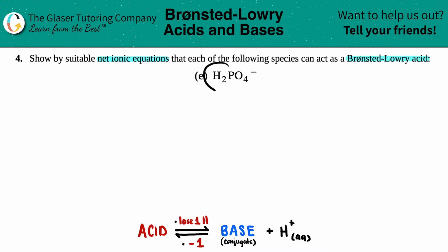So in this case, we just have to show that H2PO4 minus can act as a Brønsted-Lowry acid via a net ionic equation.